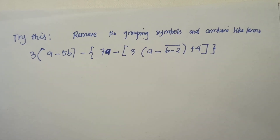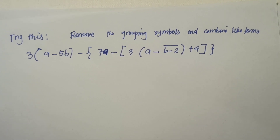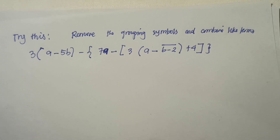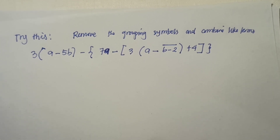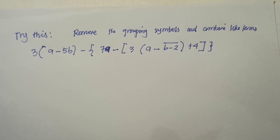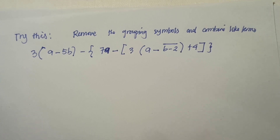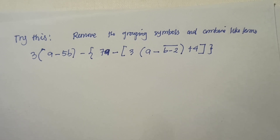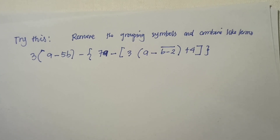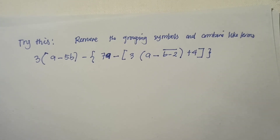Let's try this one at home — remove the grouping symbols and combine like terms: 3 times the quantity of a minus 5b, minus the quantity of 7a minus the quantity of 3 times the quantity of a minus the vinculum of b minus 2, plus 4. Please post your answer in the chat box. Thank you, and good day!